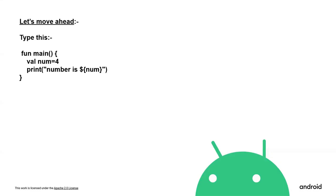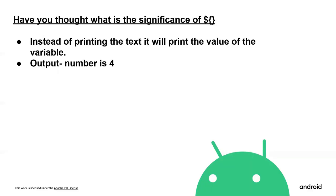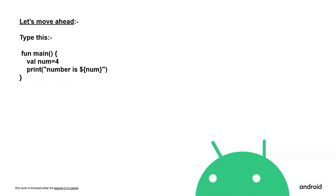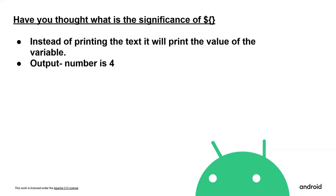Can you please write this code in the Kotlin Playground? Here you can see that num is assigned 4. We wrote num equal to 4 and we print 'num is ${num}'. The significance of the dollar sign with curly braces is that instead of printing the text, it will print the value of the variable. Since we assigned num equal to 4, when we print 'num is ${num}', it will print the value of num, which is 4. So the output will be 'number is 4'.